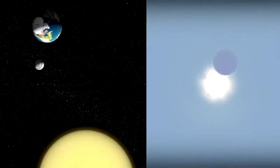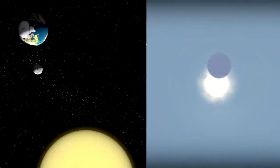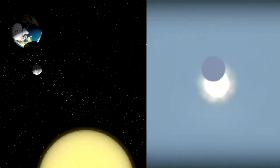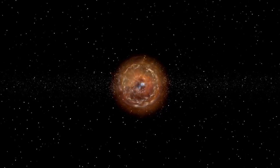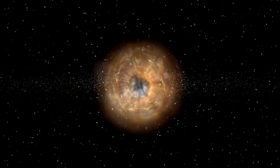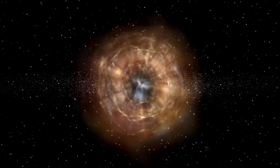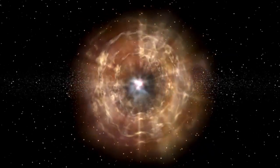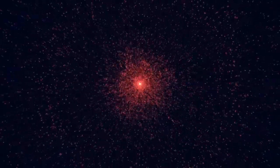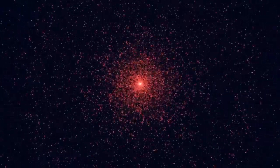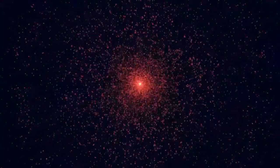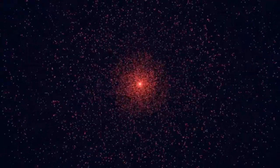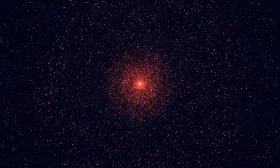Betelgeuse is also known for its fluctuating brightness. It's classified as a semi-regular variable star, meaning its brightness changes over a cycle of about 400 days, with longer fluctuations happening over a five-year period. While this behavior has been observed for centuries, the star has sometimes shown unexpected changes that don't fit known patterns.